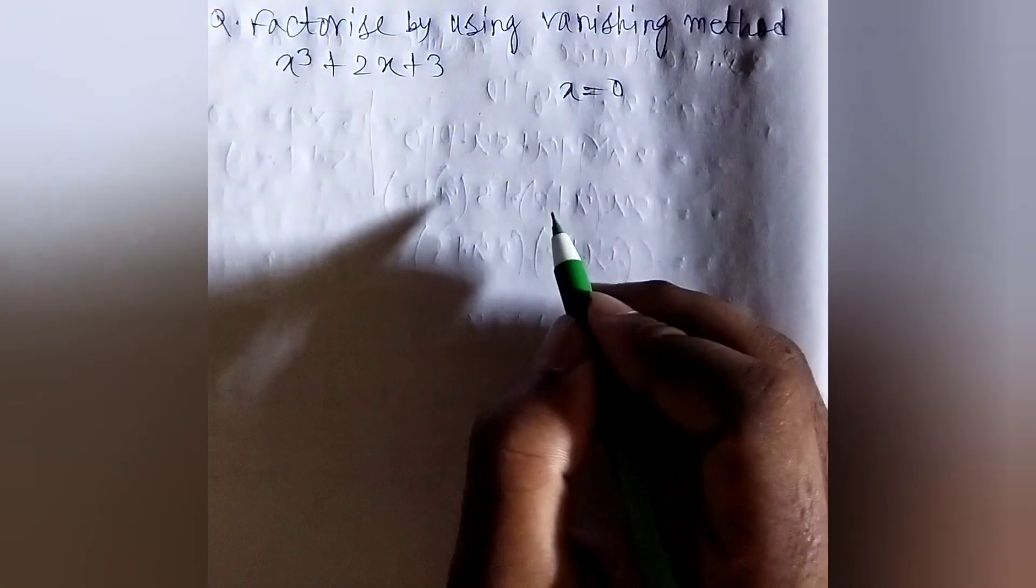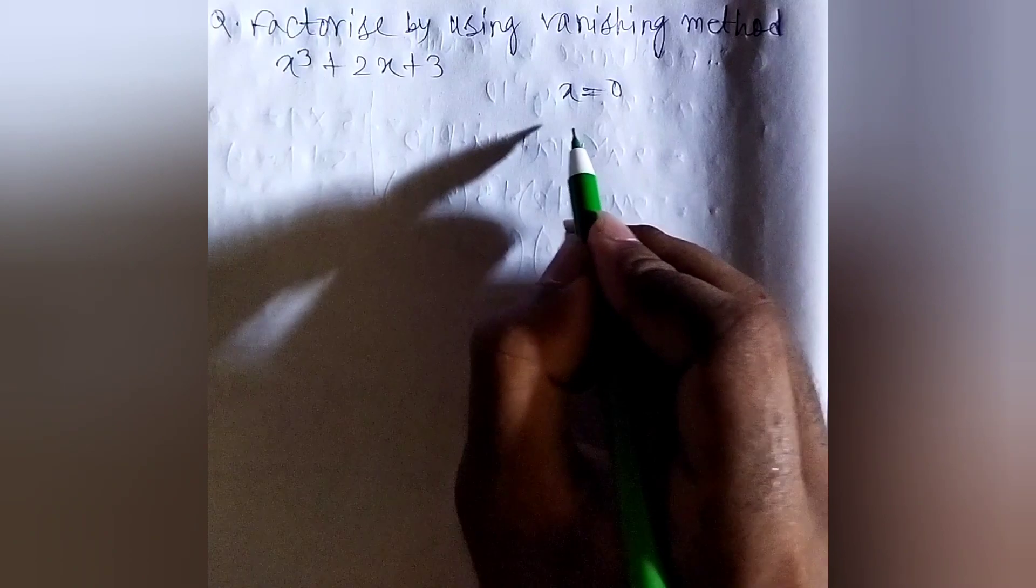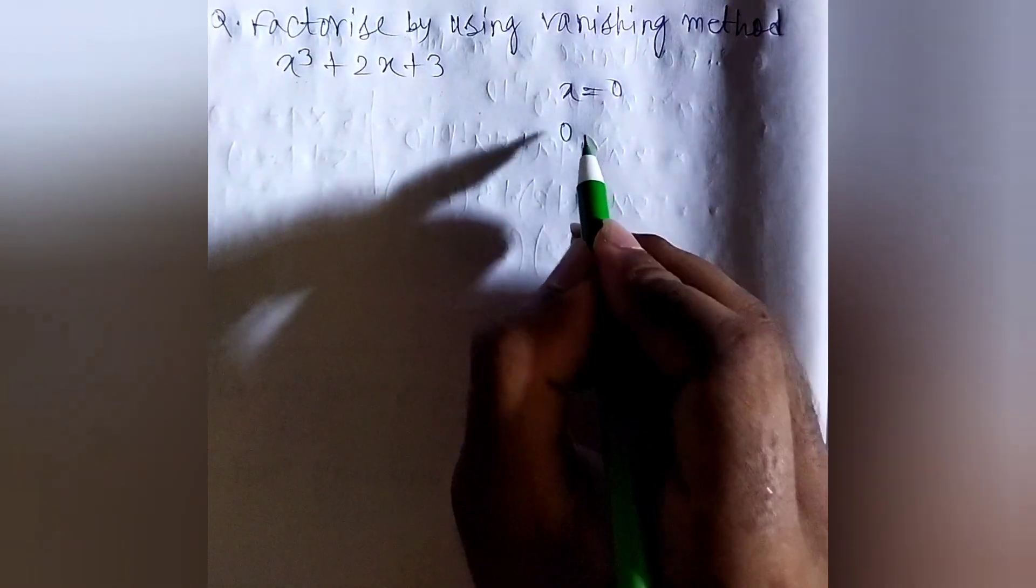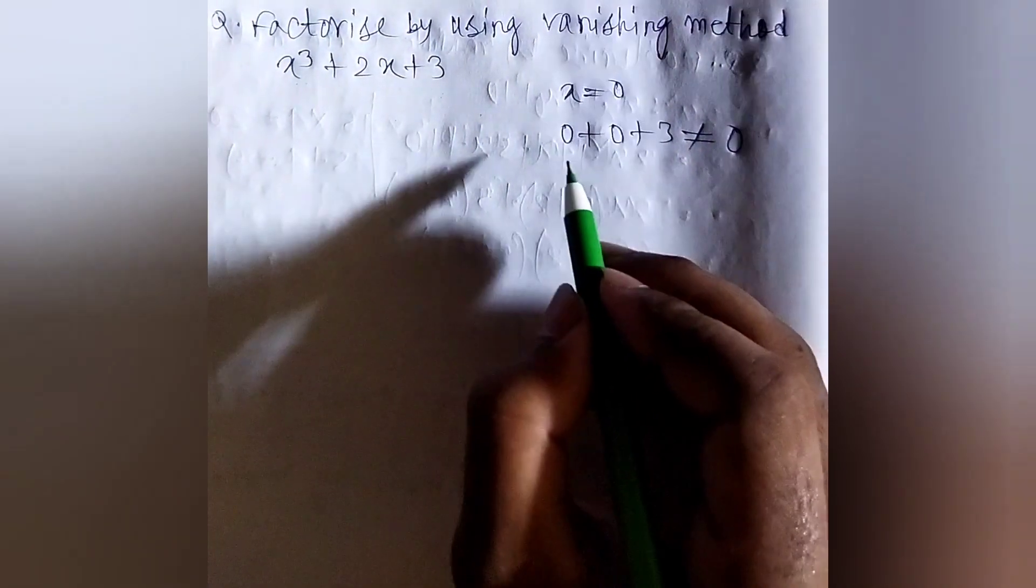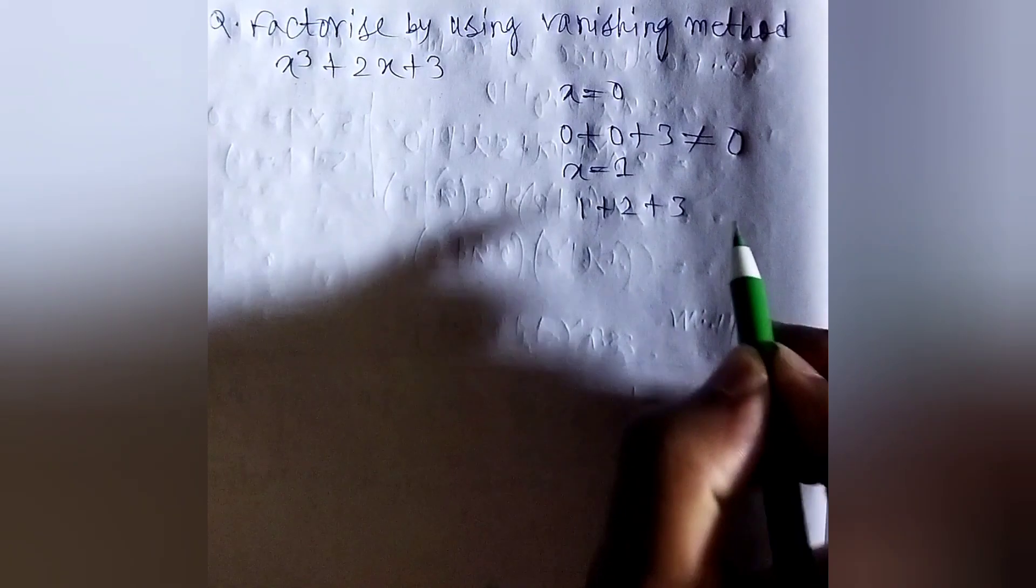So, if we take x equals 0, then this polynomial becomes 3: 0 plus 0 plus 3, so not equal to 0. For x equals 1: 1 plus 2 plus 3, so not equal to 0.